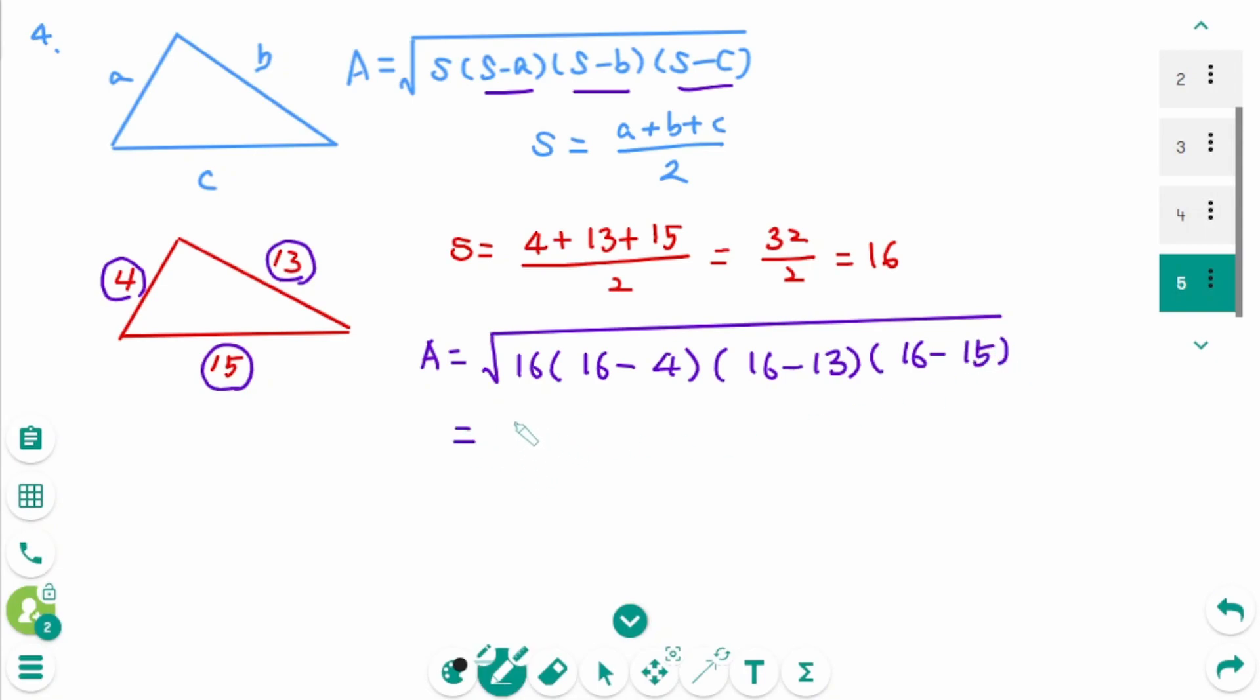Equals square root of S times S, 16 minus 4 is 12, then S, 16 minus S, 13 is 3, and S, 16 minus S, 15 is 1.